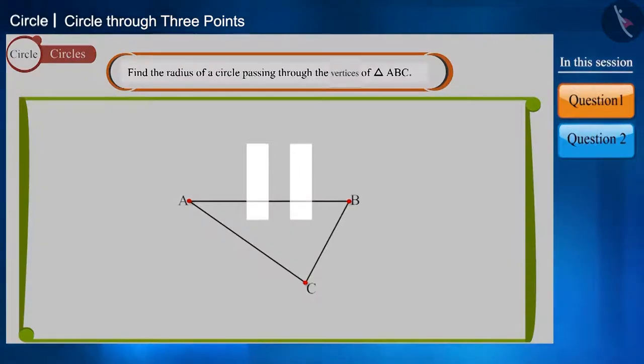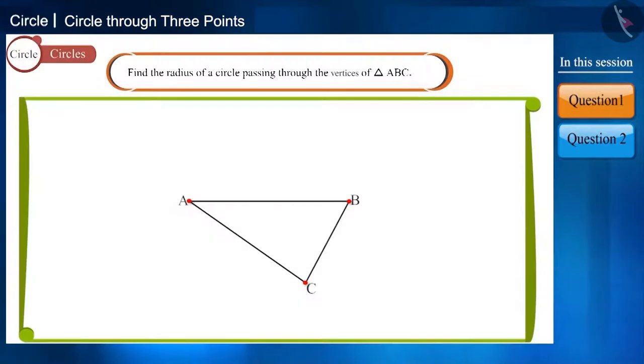You can pause the video and try to solve this. You can see that all three points are non-collinear points. That is, there will be one and only one circle passing through these three non-collinear points.